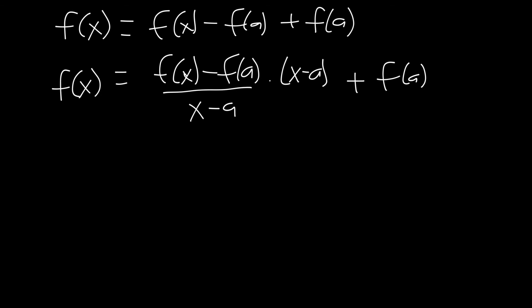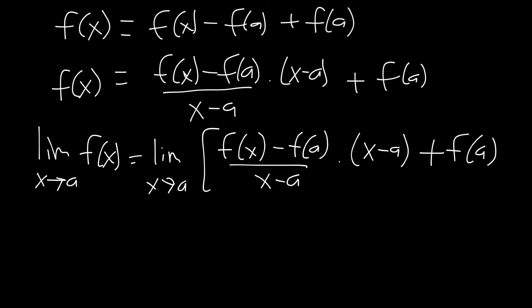Finally, let's take the limit of both sides. So the limit as x goes to a of f of x will equal the limit as x goes to a of the entire right hand side: f of x minus f of a all over x minus a times x minus a plus f of a.